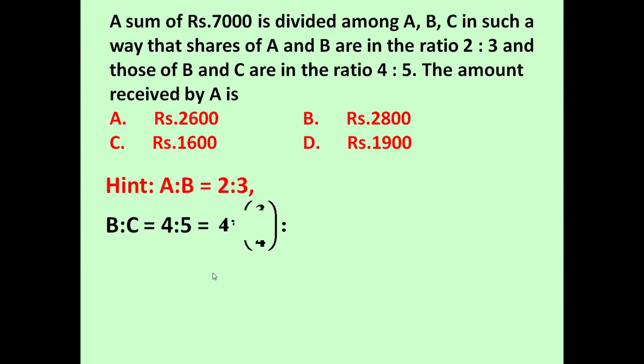To make these two equal, let us multiply 4 and 5 both with 3/4. If we multiply this 4 with 3/4, the 4s will cancel and it will become 3, and to compensate we have to multiply 5 also with 3/4.